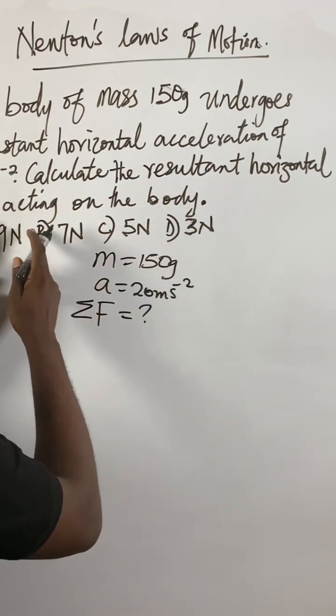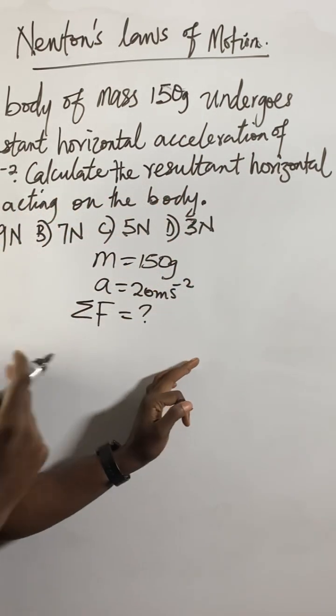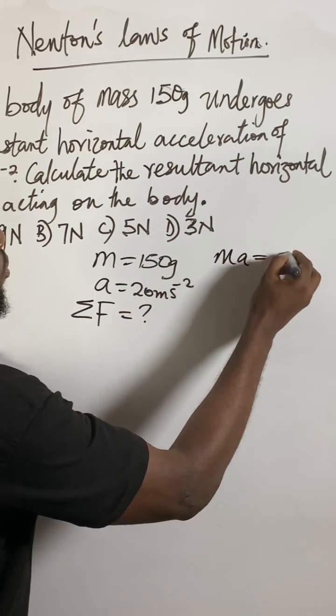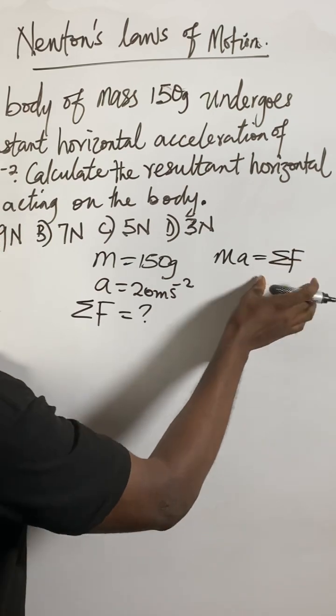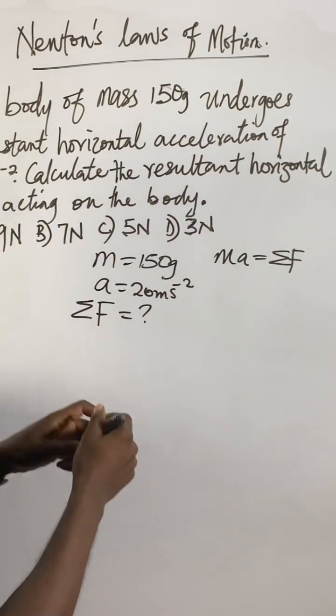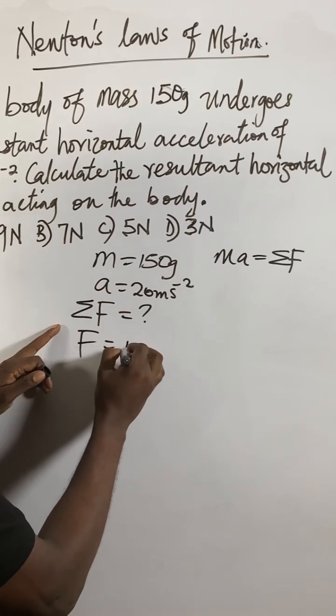Calculate the resultant horizontal force acting on the body. So you know Newton's second law of motion says mass times acceleration equal to the resultant, the summation of the resultant force. Or to keep it simple, we could say force equal to mass times acceleration.